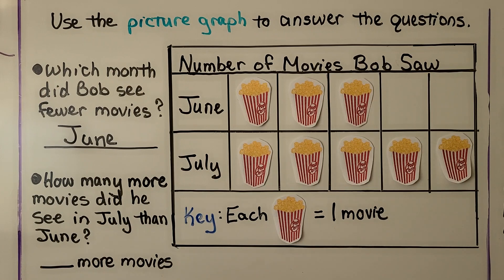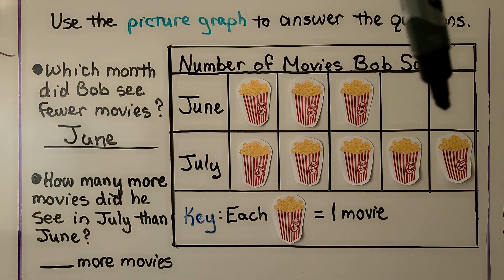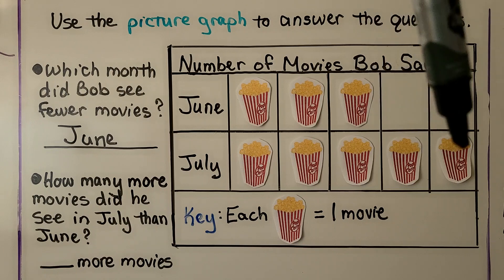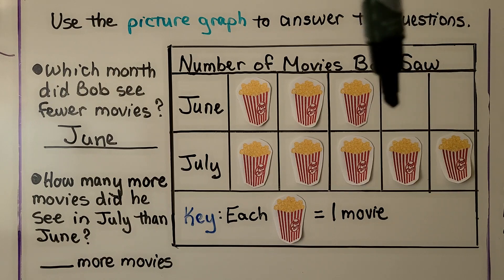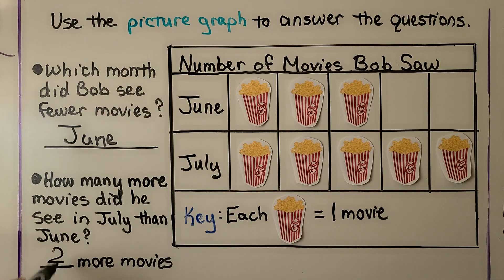This question says: how many more movies did he see in July than June? We can see the empty spaces here — July has two more boxes of popcorn than June. That means he saw two more movies in July.